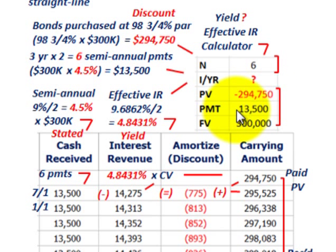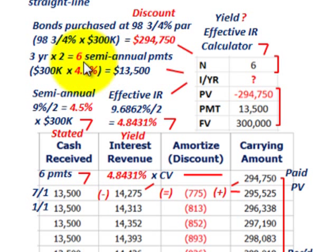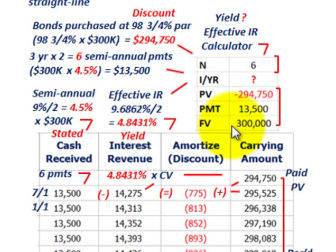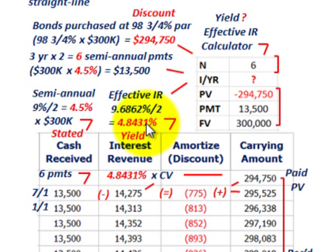The payment is straightforward: 4.5% semi-annual interest rate times $300,000 gives us a semi-annual payment of $13,500 — enter that as a positive amount. The future value is the maturity value, $300,000. Hit your interest function and the effective interest rate comes up on a semi-annual basis at 4.8431%. Multiply that by two annually, giving you 9.6862%. This is what we have to use for our amortization.